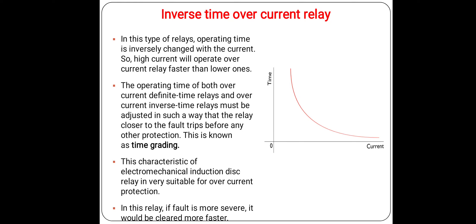The inverse time overcurrent relay operates such that the operating time is inversely proportional to the current — high current will operate the relay faster than lower ones. The operating time of both definite time and inverse time relays must be adjusted so that the relay closer to the fault trips before any other protection. This is known as the time-graded procedure. In this relay, when the fault is more severe, it is cleared faster.